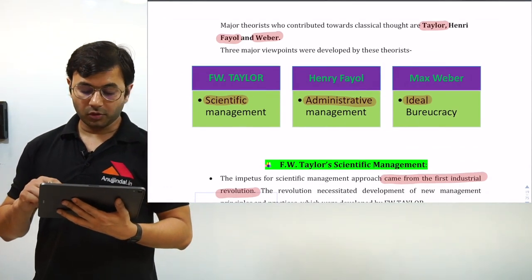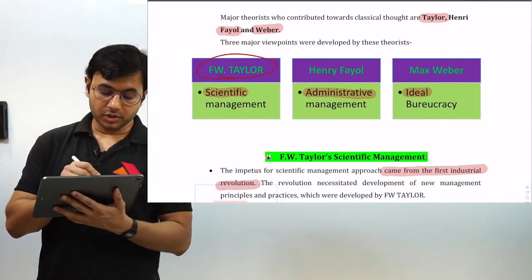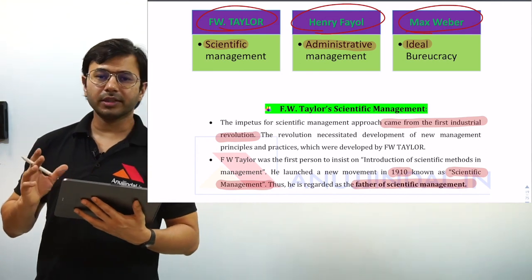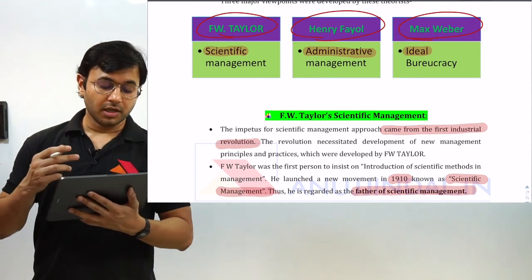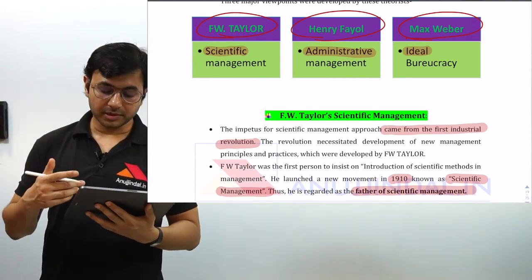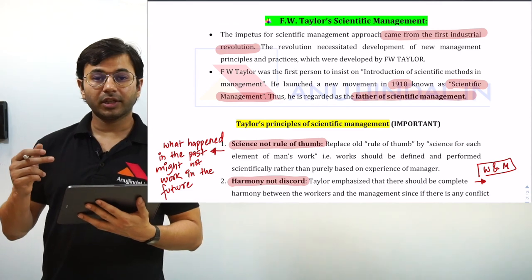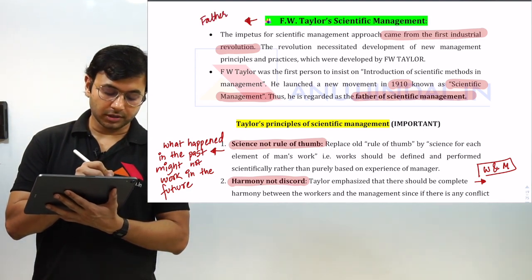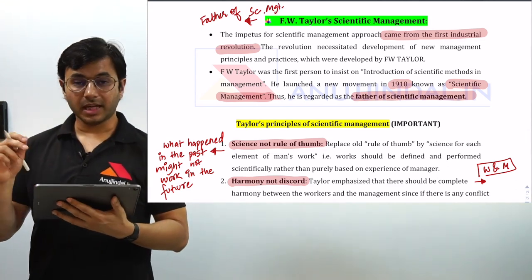There are three major classical theorists: F.W. Taylor, Henry Fayol, and Max Weber. Taylor gave his theories on scientific management, Henry Fayol gave the universal 14 principles of management, and Max Weber talked about certain points which can ensure an ideal bureaucracy. Taylor is also called the father of scientific management — do not forget that, as it can be asked in the examination.